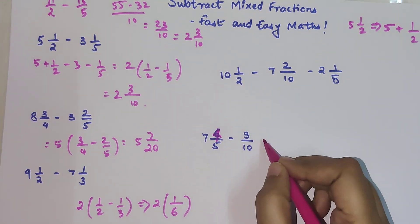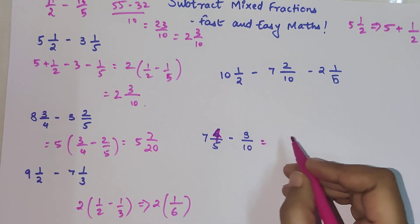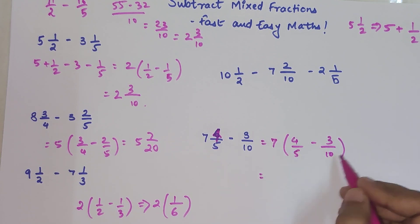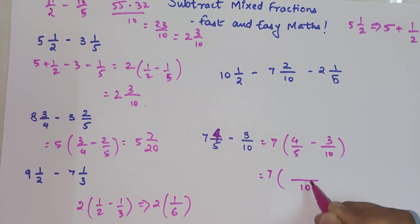In such a case, we're just going to keep 7 as it is, and then we're just going to start with our normal subtraction of proper fractions. So 7. Then your LCM will be 10 because 10 comes in 5 stable. So 4 will get multiplied by 2, which is 8 minus 3. This is going to get you 7 5/10.